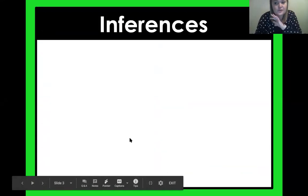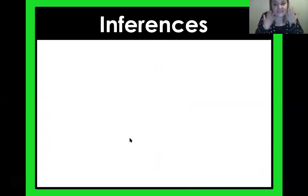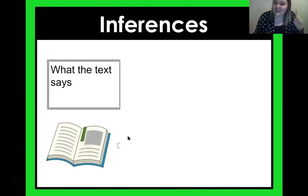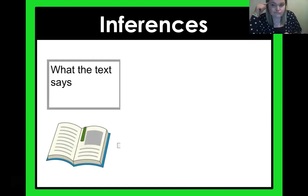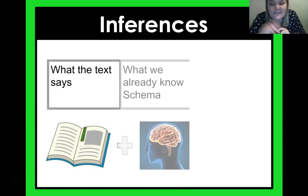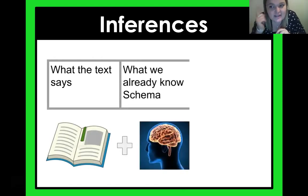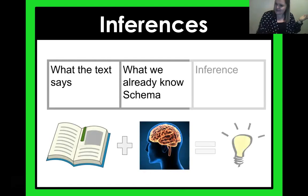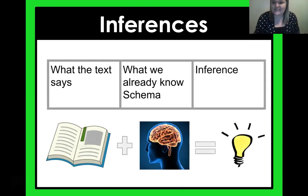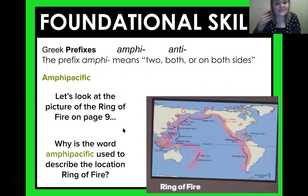Let's review: what is an inference? What's that first thing you need, fourth graders? You got to go back in the text and find those details. Then what do you use? You've got to use what's in that brain — or that fancy word, schema. Then you have yourself an inference. Great job. So that's our first success criteria: you know what an inference is.